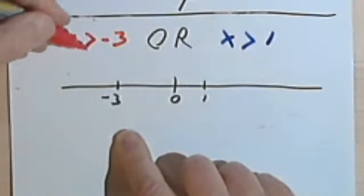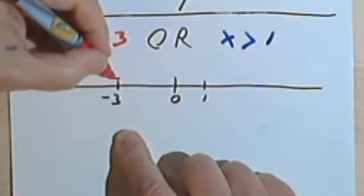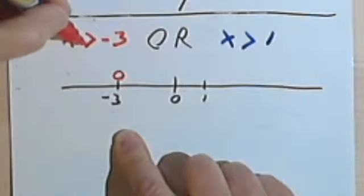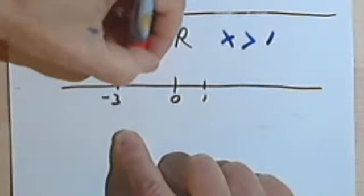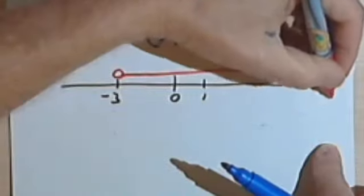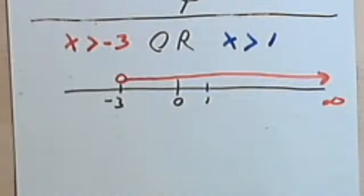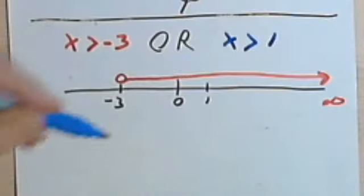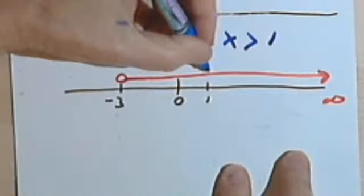Okay, so for x is greater than negative 3, I'm starting just past the negative 3, so I've got an open circle, and my arrow is going up towards infinity. And we have OR. x is greater than 1.